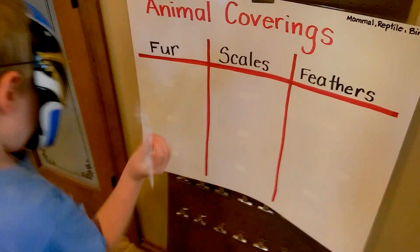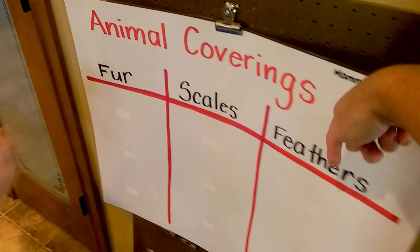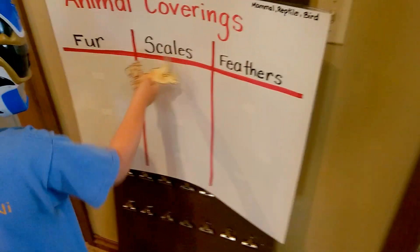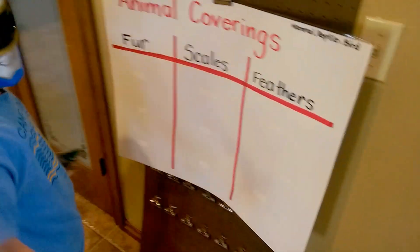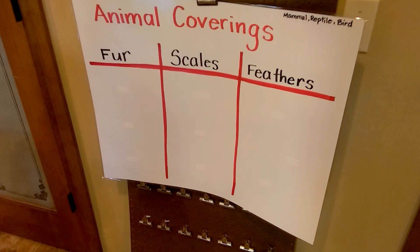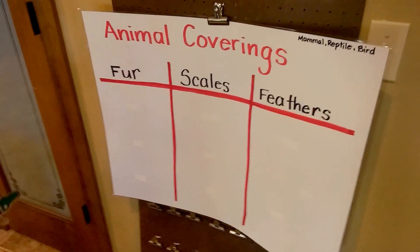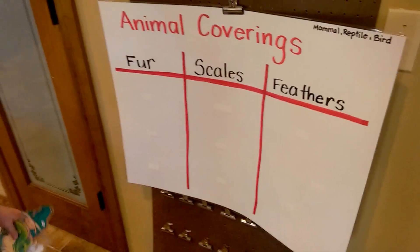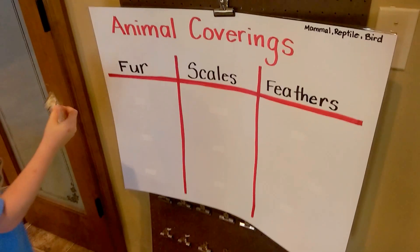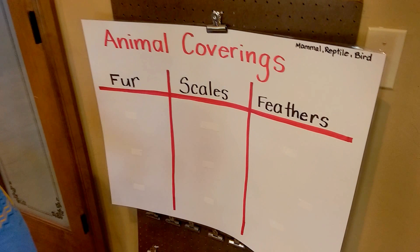Can you tell me what each of these say here? Birds, scales, feathers. Okay, and can you go ahead and show the viewers where each of those animals goes? You can tell me what the animal is and what kind of covering they have.